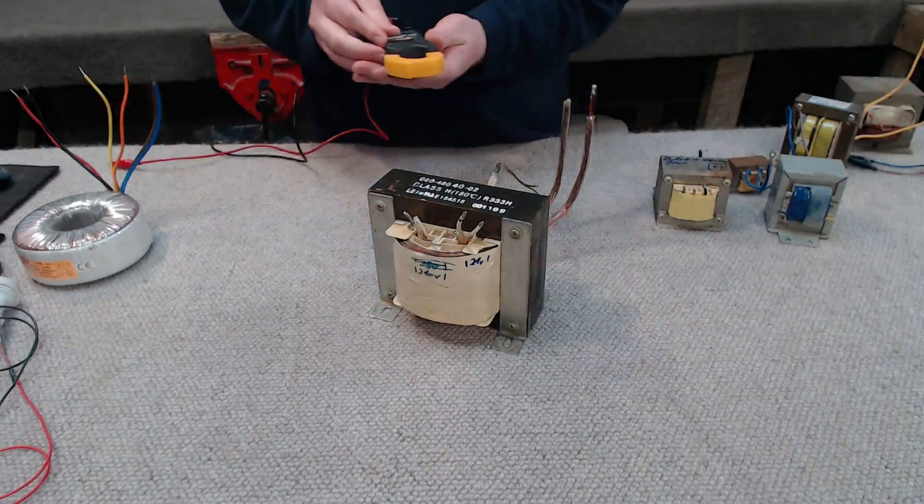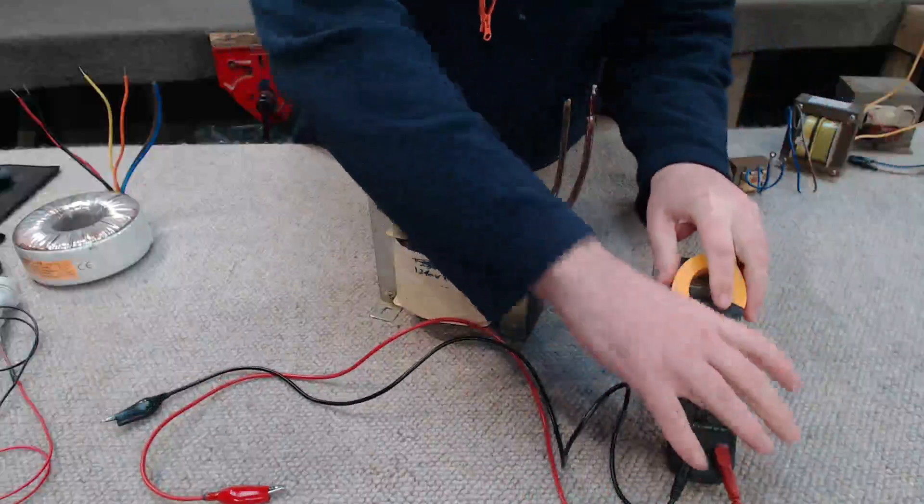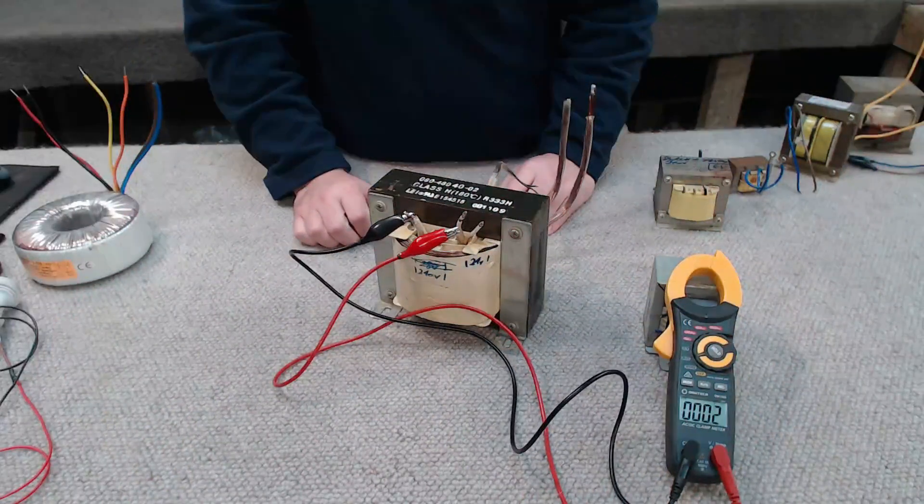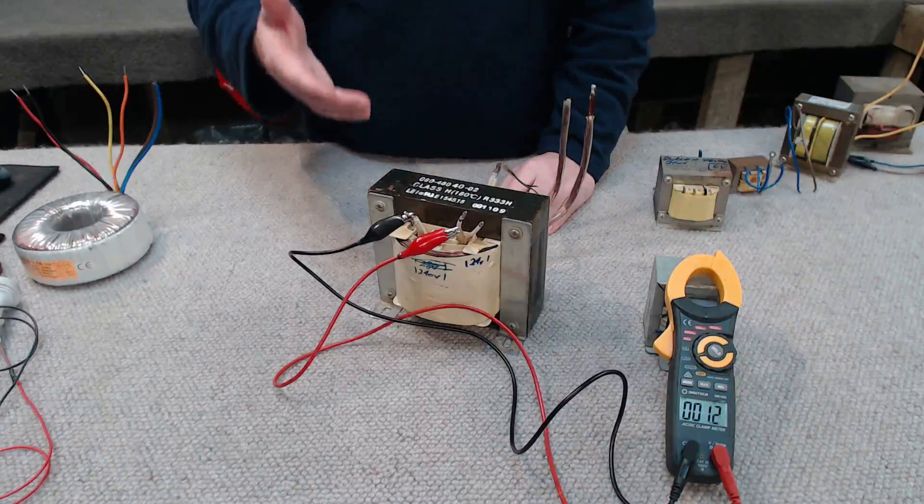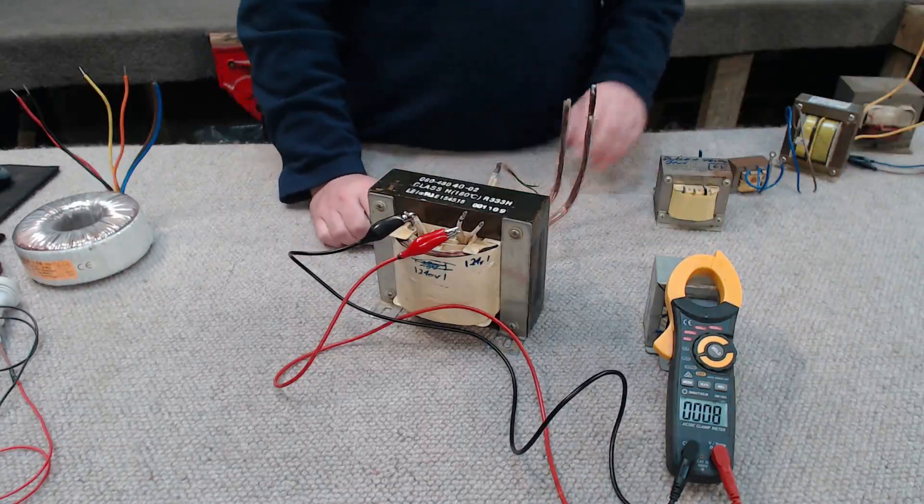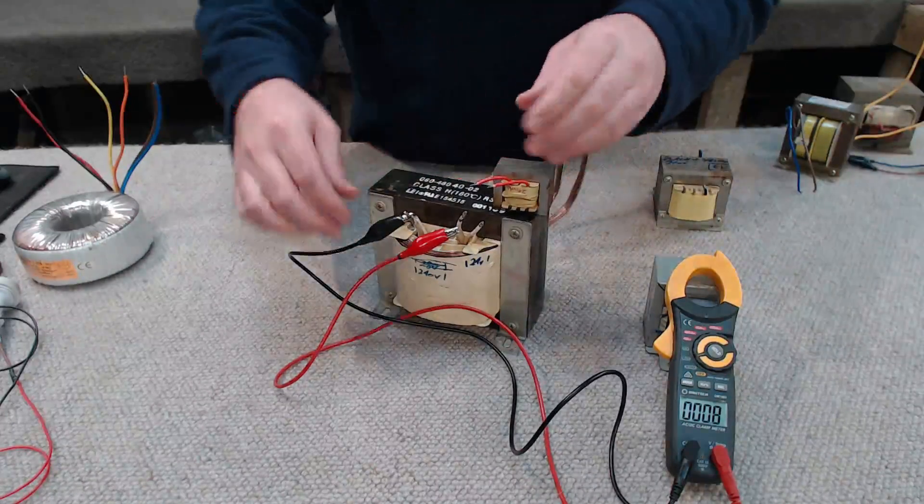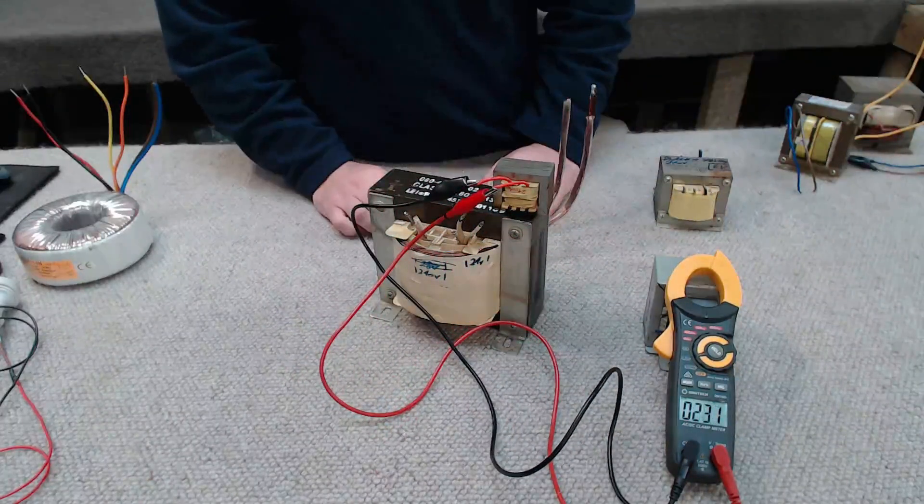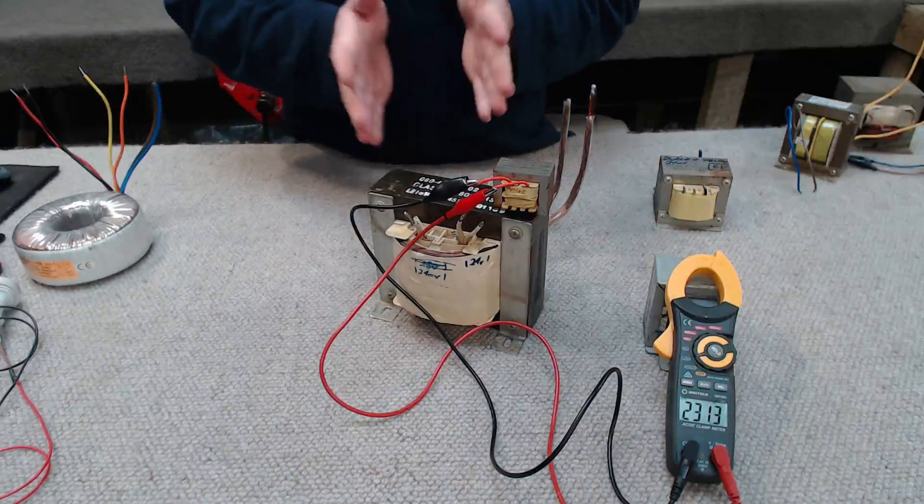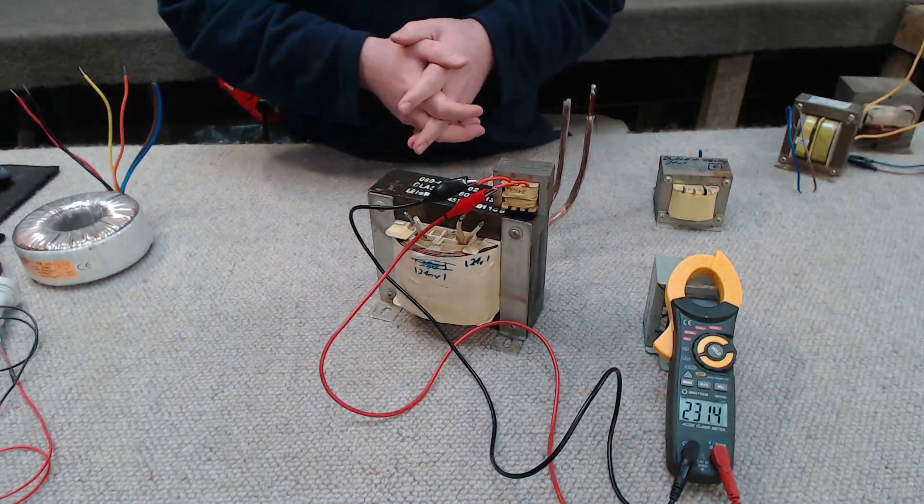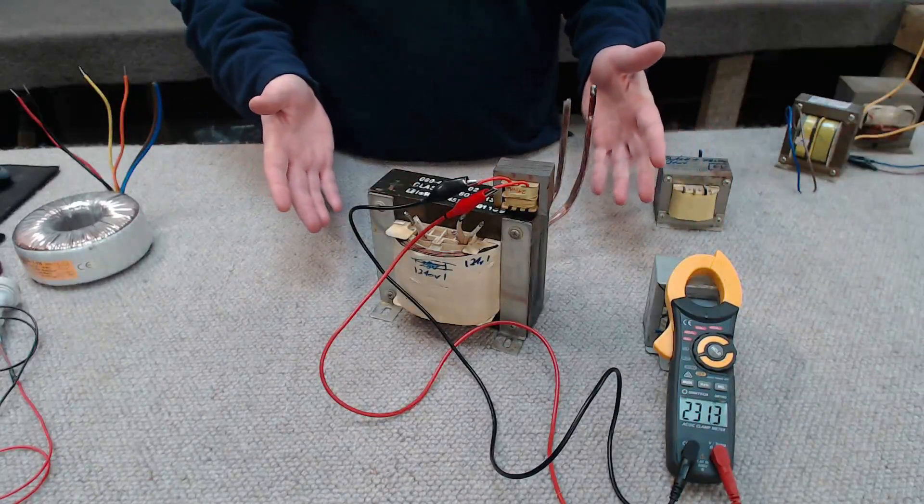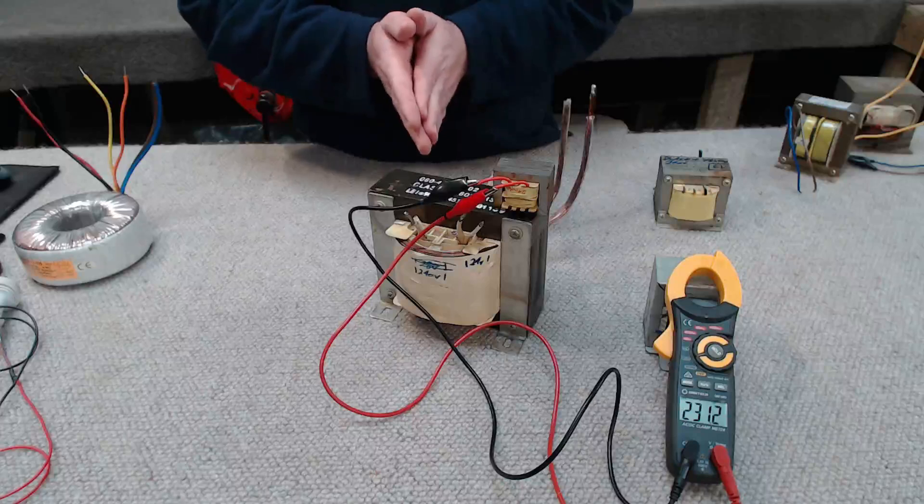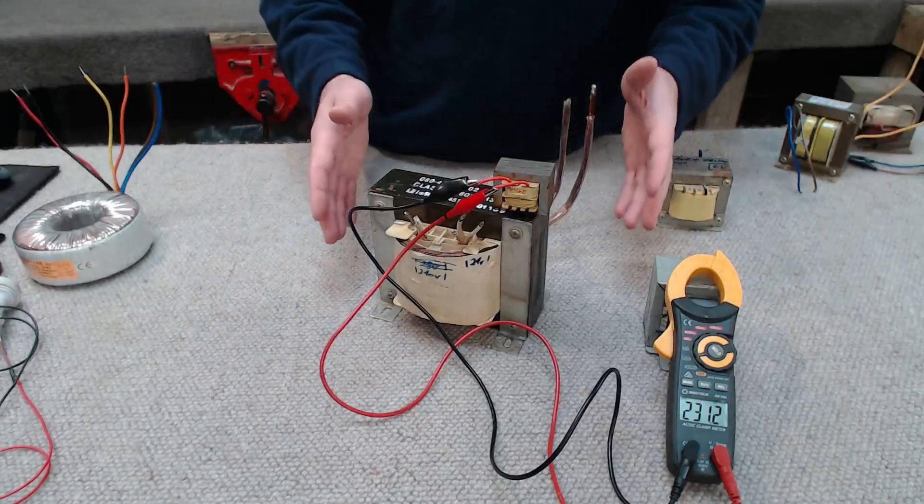And we're going to measure the resistance of the primary winding. So this transformer has only one ohm of resistance on its primary winding. And if we connect up our multimeter to the primary winding on this little transformer. There we go. We can see it's got a resistance of 231 ohms. So both of these transformers are designed to run off 220 volts or thereabouts, and both have vastly different resistances on their primaries. So we can't use a multimeter alone to work out what a primary and secondary is.